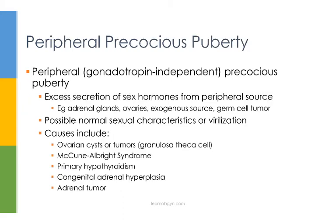Now let's talk about peripheral, or gonadotropin-independent precocious puberty. This kind of puberty is due to excess secretion of sex hormones from sources such as the adrenal glands, ovaries, exogenous sources, or ectopic sources like gonadotropin from a germ cell tumor. These patients may develop normal secondary sexual characteristics, or they may be abnormal — in particular, you might see some virilization.